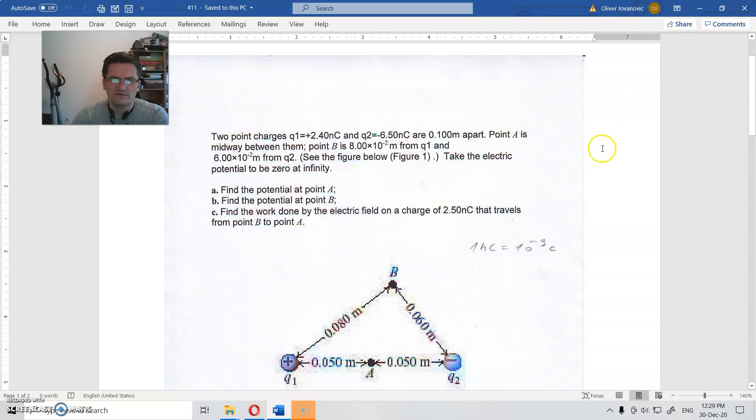Take the electric potential to be zero in the field. Under A, find the potential at point A. Then find the potential at point B. And C, find the work done by the electric field on a charge of 2.5 nanocoulombs that travels from point B to point A.